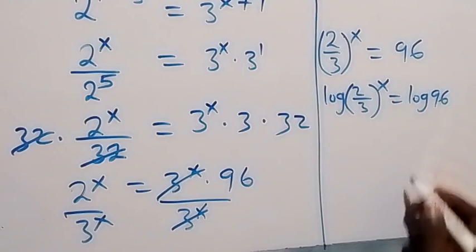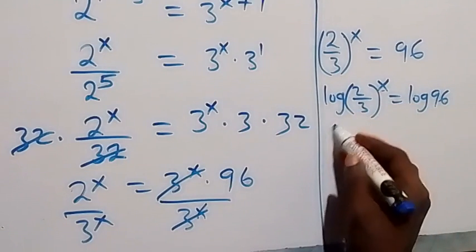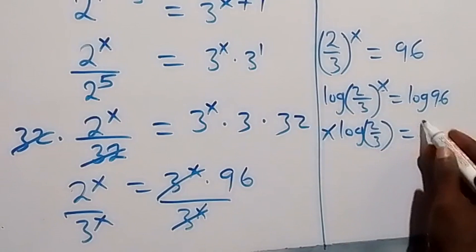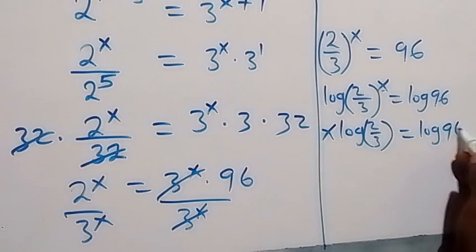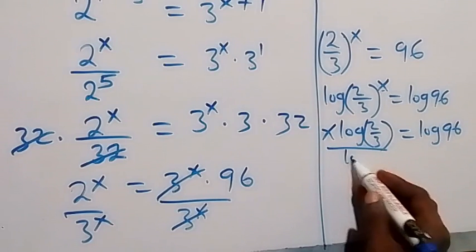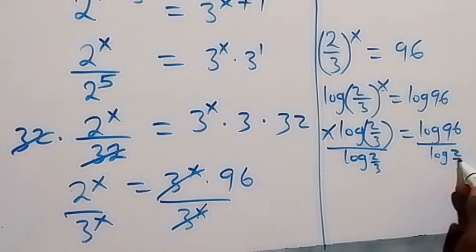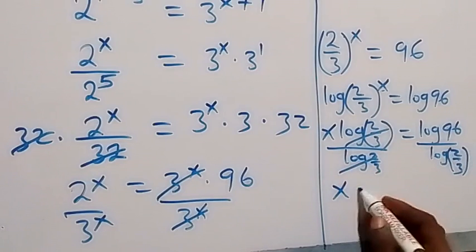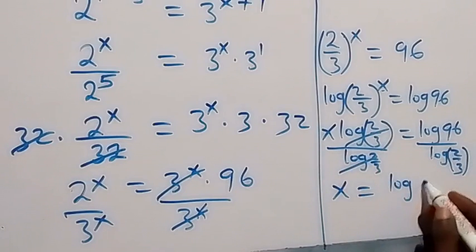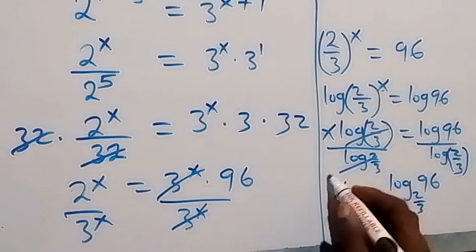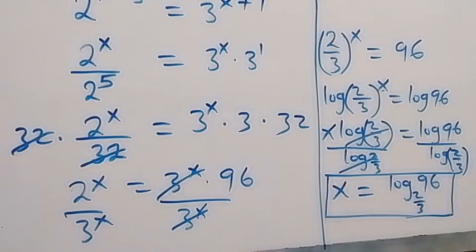Then we take the log on both sides: log of 2 over 3 raised to power x equals to log 96. This power of x comes to the back, giving x log(2/3) equals to log 96. Divide both sides by log(2/3), these cancel, and x equals to log 96 over log(2/3), which we can write as log base 2/3 of 96 from the change of base rule. So here we also have the value of x from the second method.